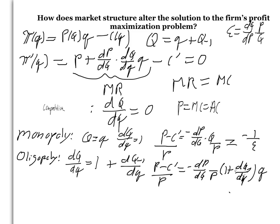Hence, the price cost margin for a firm maximizing profits in an oligopoly depends on the inverse of the elasticity of demand, its market share, and the response of rivals to the firm's output choice.